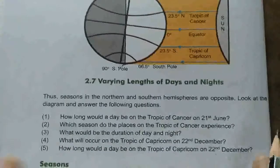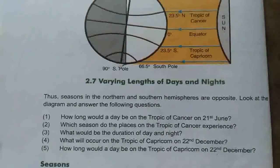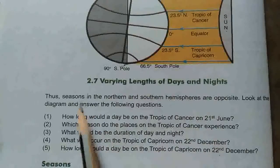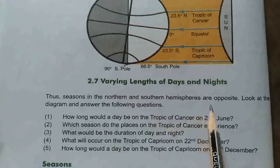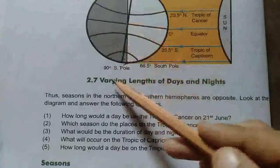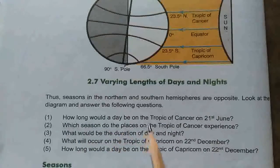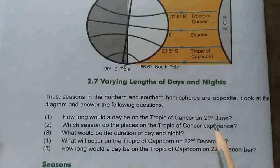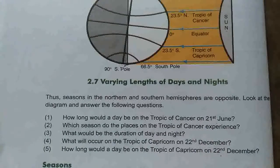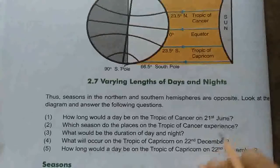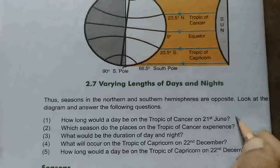Here some questions are given. Let us answer them. The seasons in the northern and southern hemispheres are opposite. Look at the diagram and answer the following questions. First: how long would a day be on the Tropic of Cancer on 21st June? As I mentioned, it is the longest day — so the answer is 14 hours.